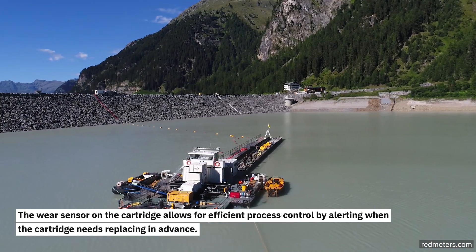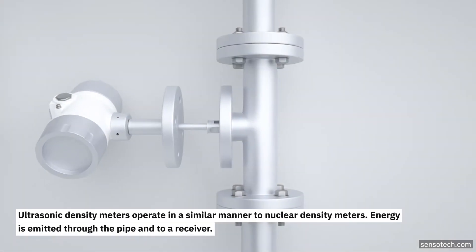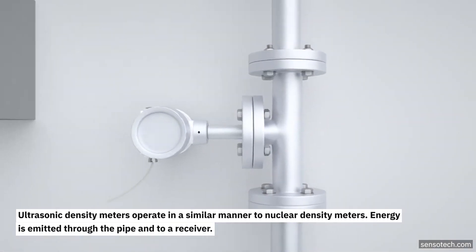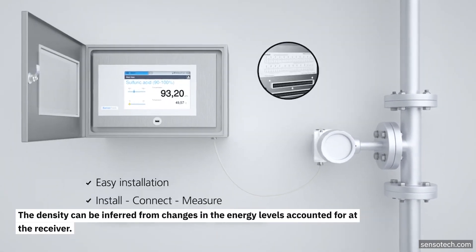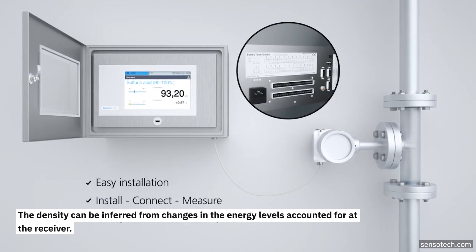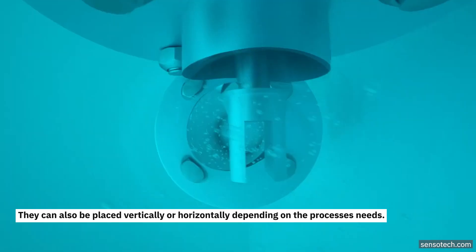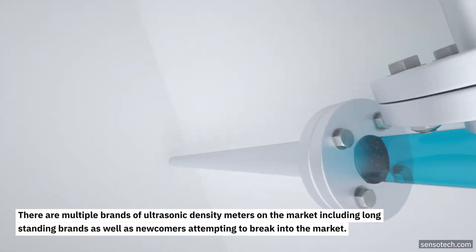Ultrasonic density meters operate in a similar manner to nuclear density meters. Energy is emitted through the pipe into a receiver. The density can be inferred from changes in the energy levels accounted for at the receiver. They can also be placed vertically or horizontally depending on the process needs. There are multiple brands of ultrasonic density meters on the market, including long-standing brands as well as newcomers attempting to break into the market.